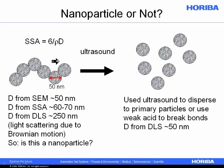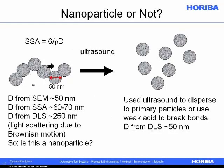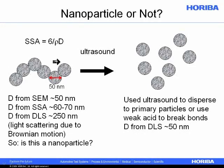So are these nanoparticles or not? It depends on how you measure it and how you report the results. I could take this sample, treat it with ultrasound — probably an ultrasonic probe, or expose it to some weak acid to break these bonds — then measure it using dynamic light scattering and probably get a result near 50 nanometers. But still we haven't answered whether those were nanoparticles to begin with, because the particle is actually behaving as a larger agglomerate in most ways. In terms of penetration through the skin layer, it would be behaving as an agglomerate at 250 nanometers, not as the individual particles.